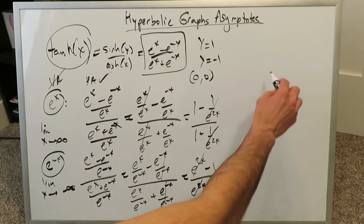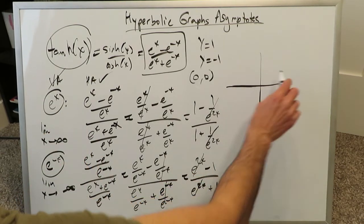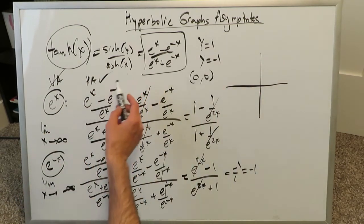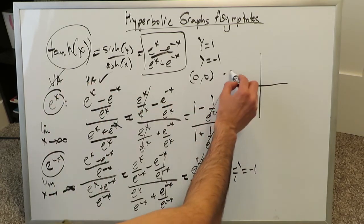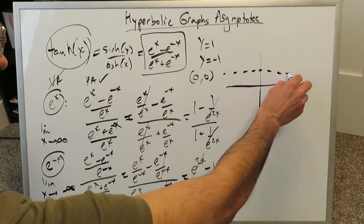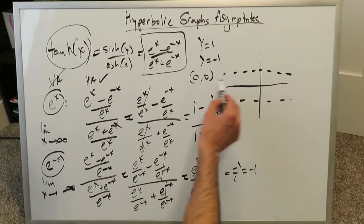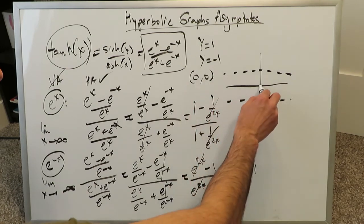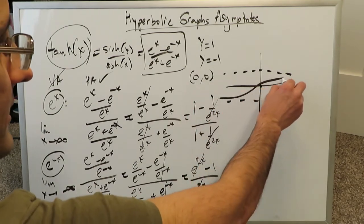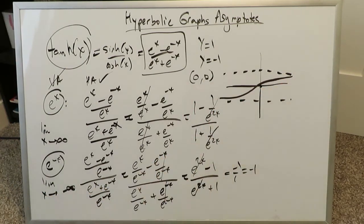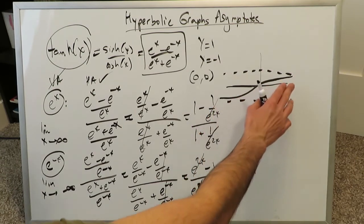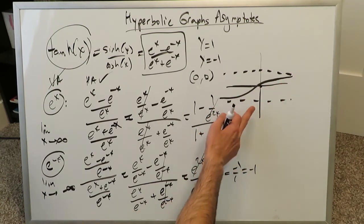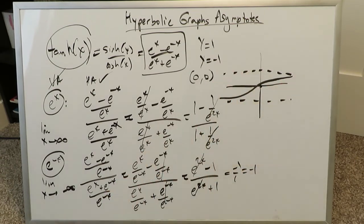So the hyperbolic tangent graph has no vertical asymptote but has two horizontal asymptotes: y equals 1 and y equals minus 1. Since the curve passes through the origin, the graph looks like an S-curve approaching y=1 from below as x goes to infinity and approaching y=-1 from above as x goes to minus infinity. The domain is minus infinity to positive infinity and the range is from minus 1 to 1, not including either endpoint.